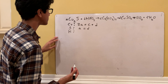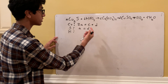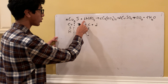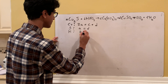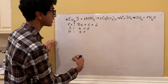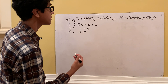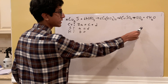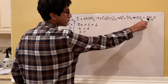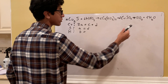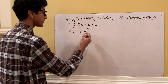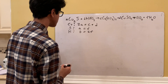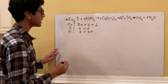Now for H: it has no subscript and only appears once on the left side, so the coefficient is B. On the right side, H appears in H₂O with subscript 2, multiplied by coefficient F. So the equation is B = 2F.